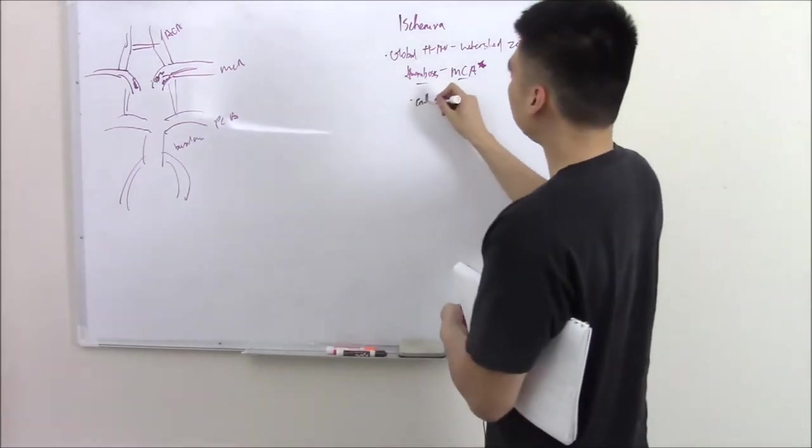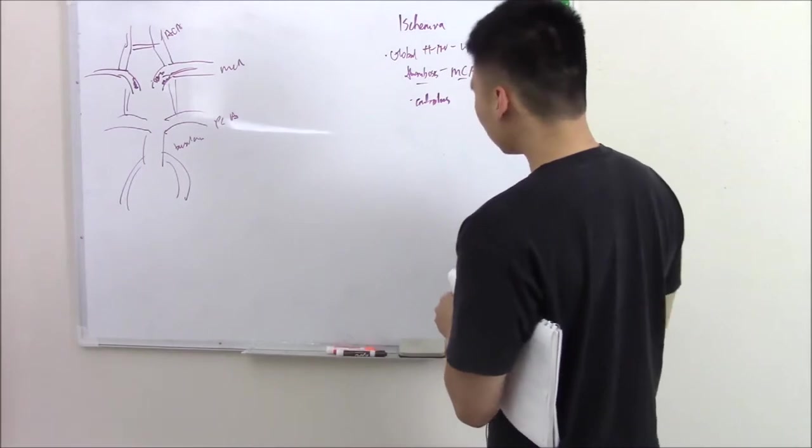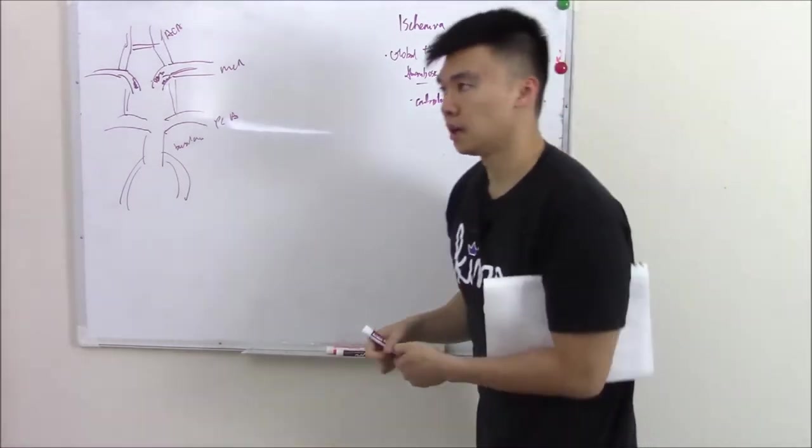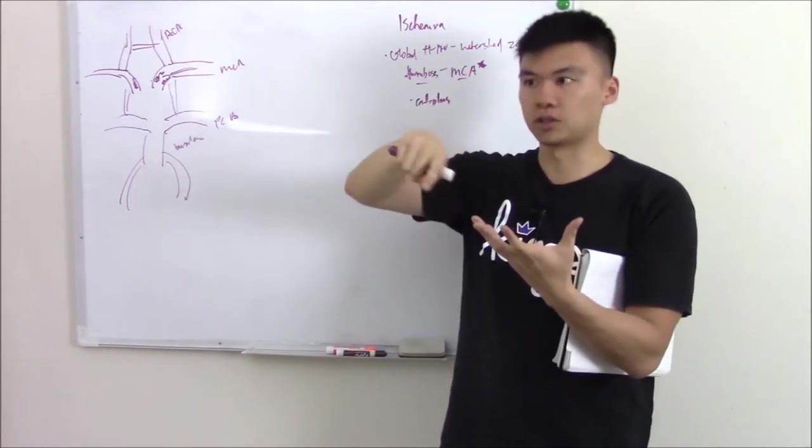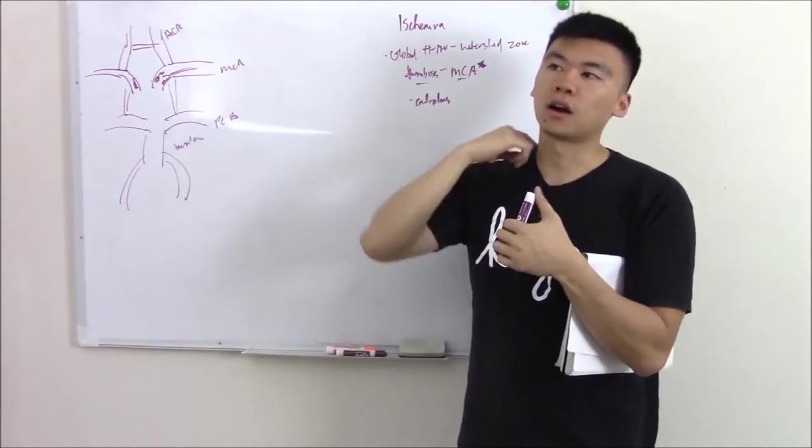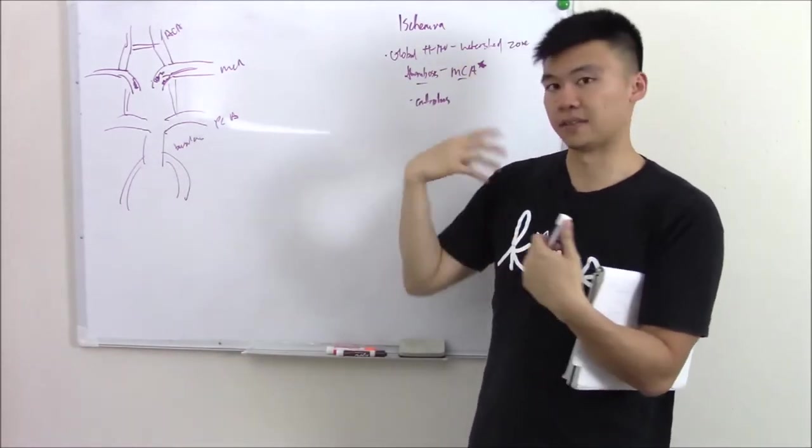But just know for your intents and purposes, thrombosis is more commonly seen in your MCA. You can also have embolus. How does an embolus get into your arterial system? Well, it can drain from your venous system. And if you have a patent foramen ovale, then it can go to your arterial system. You throw it off into your circle willis and you can have embolus there.